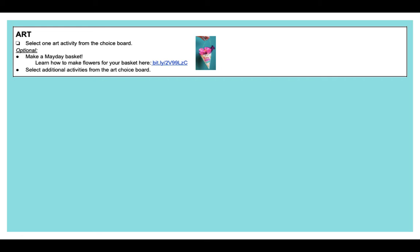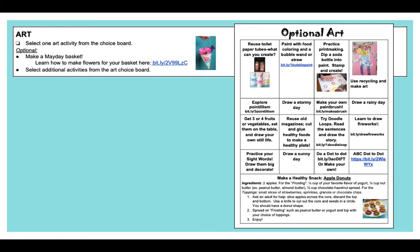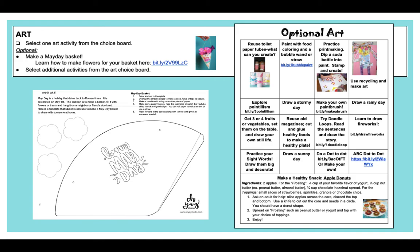And art. This week in art, it says select one art activity from the choice board. You got a new choice board in your package this week. There's lots of really cool art activities for you to do. It says just select one, but Kinder Friends, you can always do more if you have some extra time. Some of them are really easy like draw a rainy day, draw a sunny day, draw a stormy day. And some of them take a little bit more work like this.